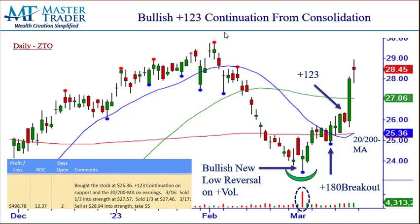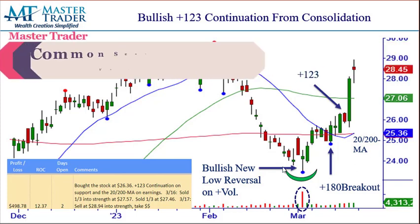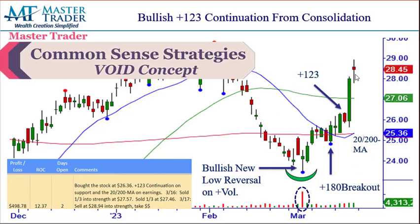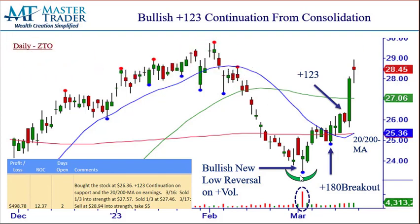We call it a subjective indicator unless it's confirmed by price action. This was in an uptrend — rising 20, 50, 200 — then had an ugly, deep fall. This is what we call a price void. When you have a momentum move lower like this, you look to the left and there's insignificant resistance or congestion that, once we have a compelling pattern, allows for a more fluid move up into the price void. So this is a climactic buy setup.